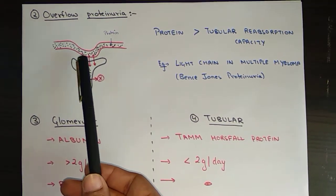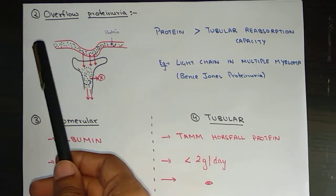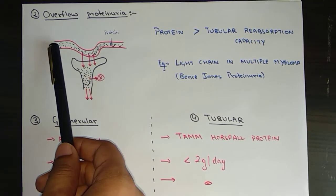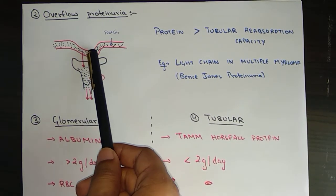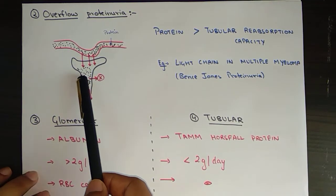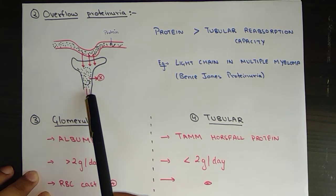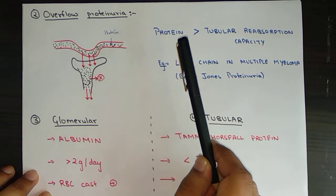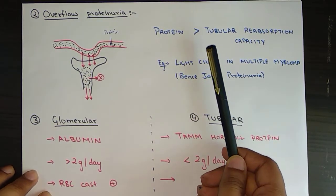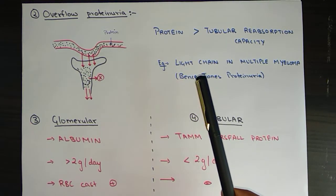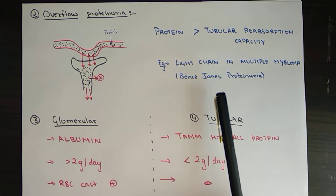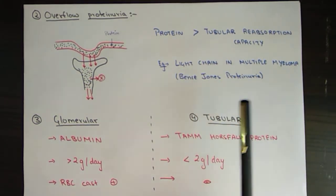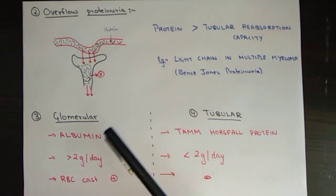In overflow proteinuria, the amount of protein in the blood is very high. It enters the glomeruli but cannot be fully reabsorbed by the tubules, so it spills into the urine. The protein in blood exceeds the tubular reabsorption capacity. An example is light chain excretion in multiple myeloma, also known as Bence Jones proteinuria, because these light chains are called Bence Jones proteins.